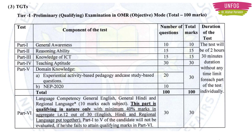In Tier 1, the exam has 6 parts for 130 marks. Part 1 is General Awareness, Part 2 is Reasoning Ability, Part 3 is Computer Knowledge, Part 4 is Teaching Aptitude, Part 5 is Domain Knowledge, and Part 6 is a Language Competency Test covering General English, General Hindi, and one regional language — 10 marks each. Aspirants must score at least 12 out of 30 across all three languages, otherwise the rest of the paper will not be evaluated.